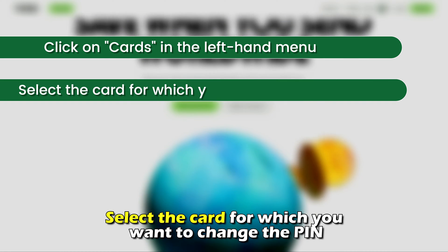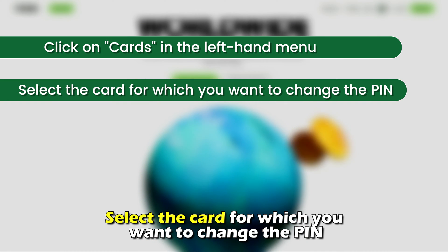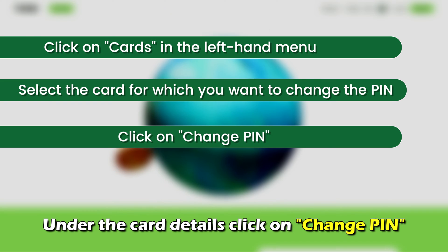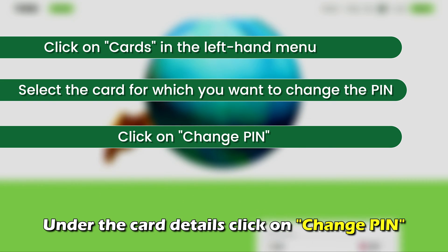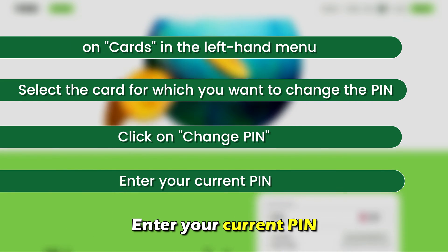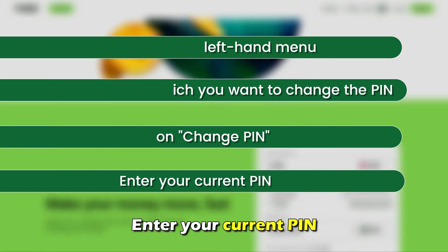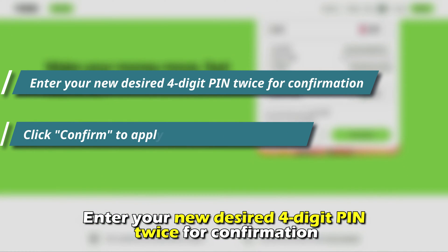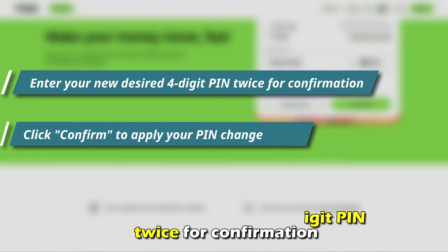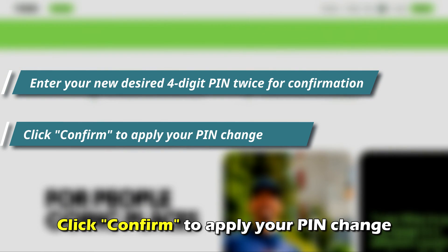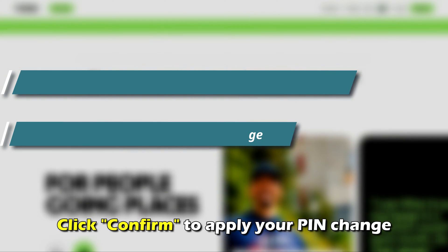Select the card for which you want to change the pin. Under the card details, click on Change Pin. Enter your current pin, then enter your new desired 4-digit pin twice for confirmation. Click Confirm to apply your pin change.